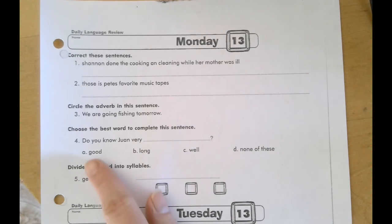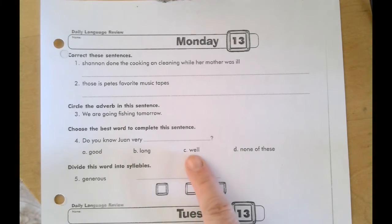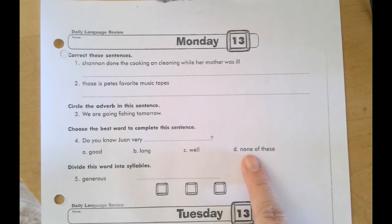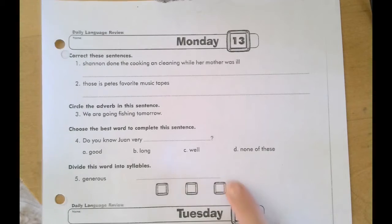Number four, choose the best word to complete this sentence. Do you know, this is a Spanish name, Juan, very... Is it good? Is it long? Is it well? Or is it none of those choices? Choose A, B, C, or D based on which is grammatically correct.